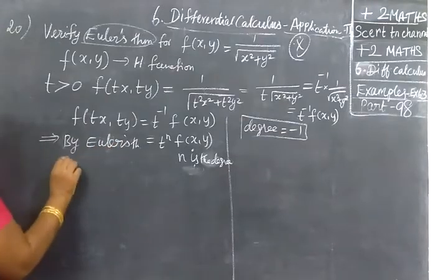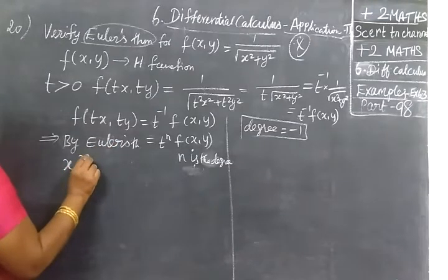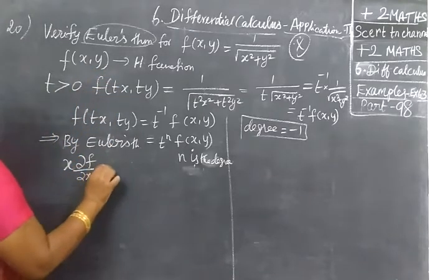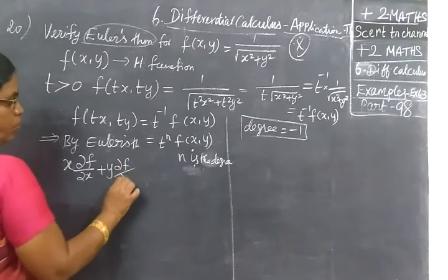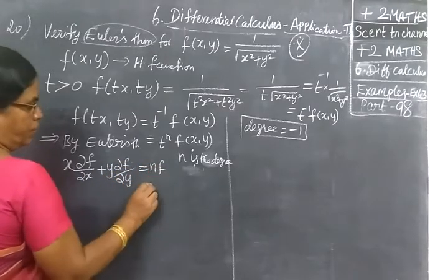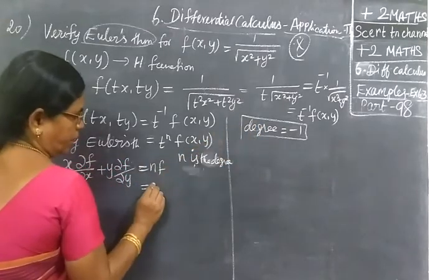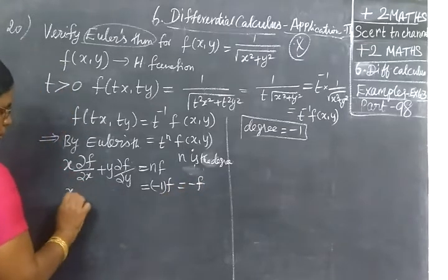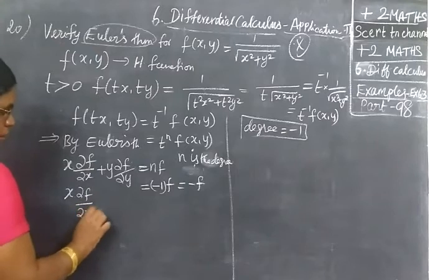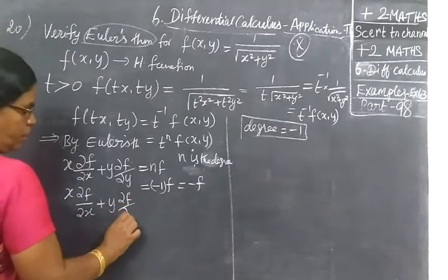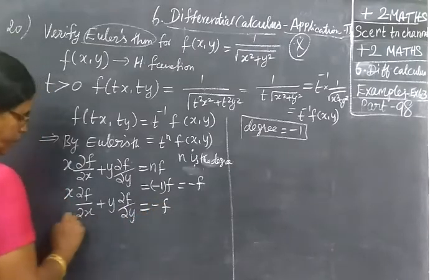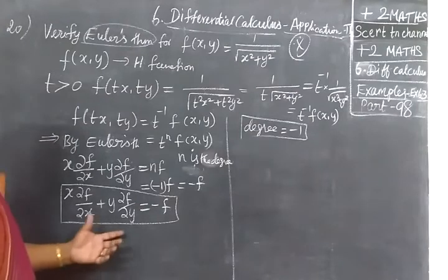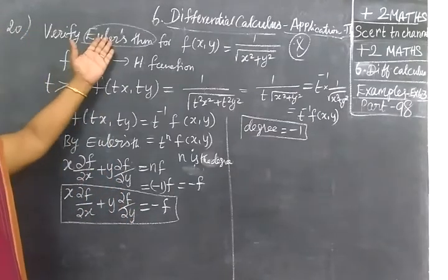So by Euler's theorem, you can write x(∂f/∂x) + y(∂f/∂y) = nf. n is equal to minus 1. So x(∂f/∂x) + y(∂f/∂y) = -f. This is the result if we apply Euler's theorem.